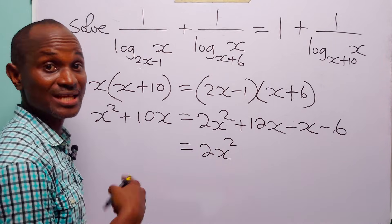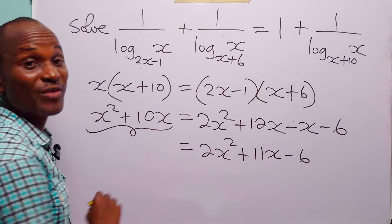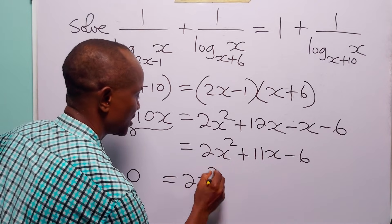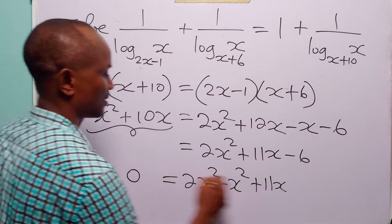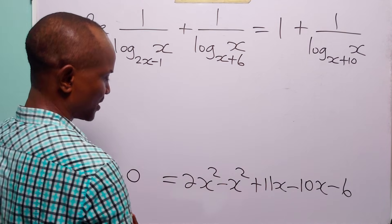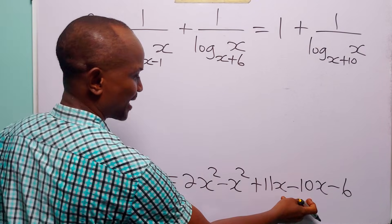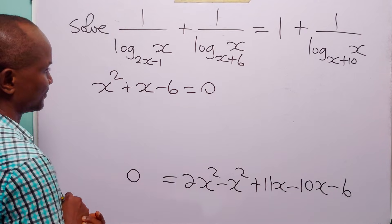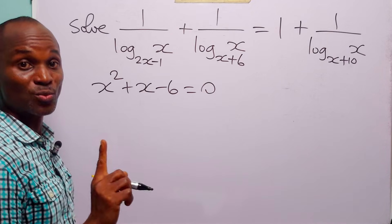This is equal to 2x squared plus 11x minus 6. Now let's move all terms to the right hand side. We are left with zero on the left, and 2x squared minus x squared plus 11x minus 10x minus 6, which gives us x squared plus x minus 6 equals zero.